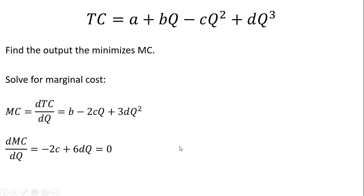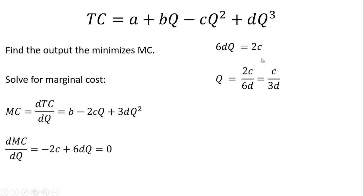Now we solve for Q: move 2C over to the right-hand side of the equation, then divide through by 6D. This simplifies down to C divided by 3D. So Q = C/3D is the output level that minimizes marginal cost.